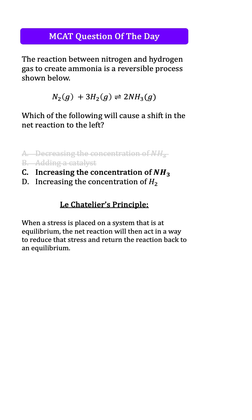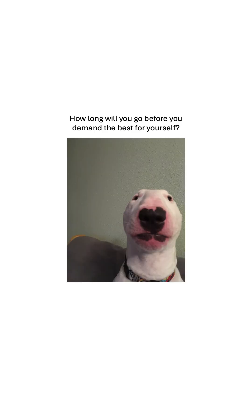C is the correct answer. If we increase the concentration of NH3, an excess is now available for the reverse reaction and the net reaction will proceed to the left to rebalance the ratios. D is not correct because increasing H2 concentration will also shift the reaction to the right. Study well!